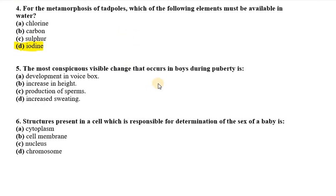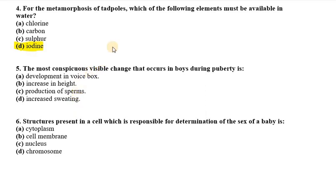The fifth question asks: what is the most conspicuous visible change that occurs in boys during puberty? The options are development of the voice box, increase in height, production of sperm, and increased sweating. The right option is increase in height, because there is elongation of bones.